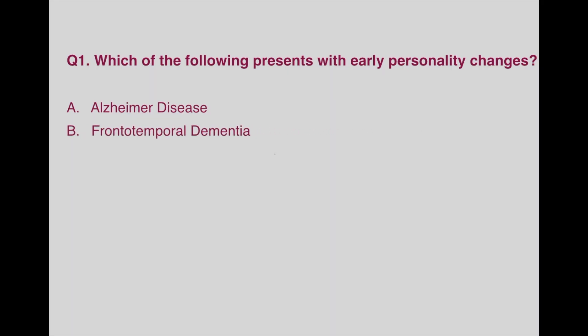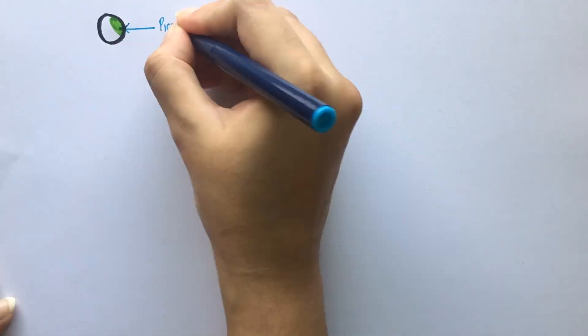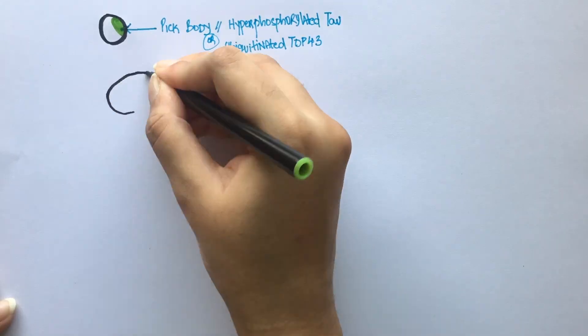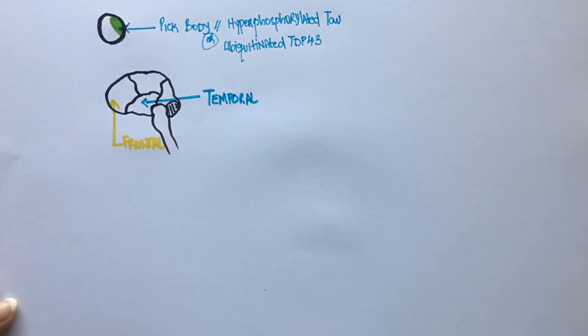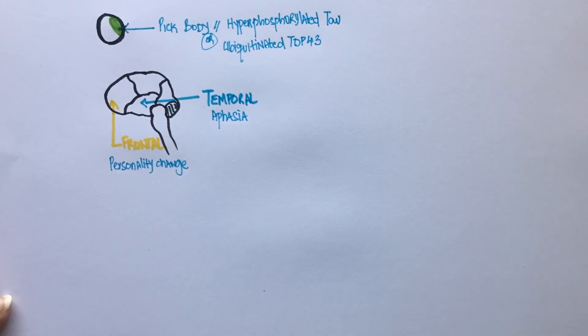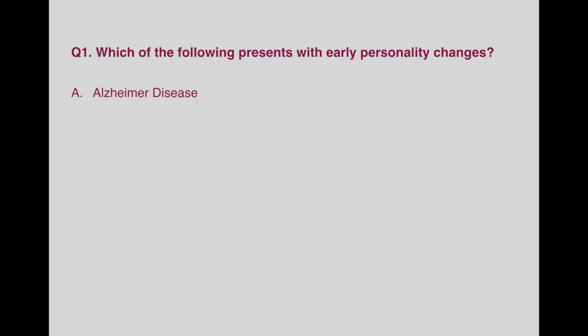The answer to this question is frontotemporal dementia. In this disease, there are Pick bodies deposited in the frontal and temporal lobes of the brain. This is why this disease is also known as Pick disease. Frontal lobe involvement results in personality changes, while temporal lobe involvement results in aphasia. Patients with Alzheimer's also have personality changes, but this happens later in the disease, as compared to frontotemporal dementia in which personality changes take place early.